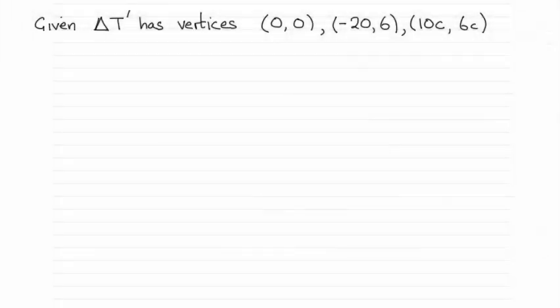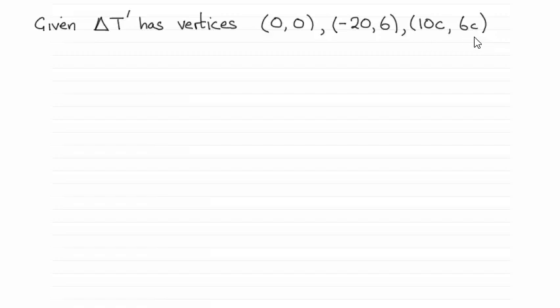Following on from the previous part, we were told that if we took a triangle T and transformed it under the matrix B, it would give us a new triangle T prime with certain vertices. We were asked to figure out what the vertices of triangle T were under that transformation B, giving the answer in terms of C.